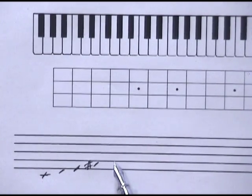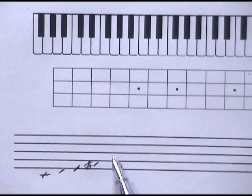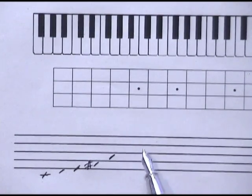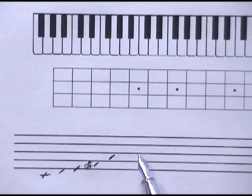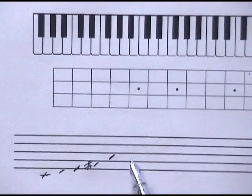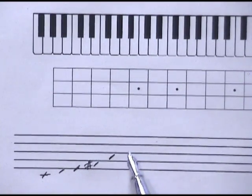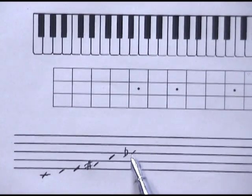Once we get to the fifth tone, the G sharp, we raise it by half a step to make it an A. And then we have, as usual, the A sharp or, if you like, a B flat.